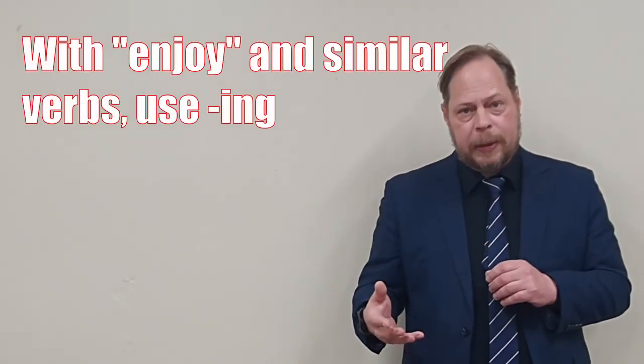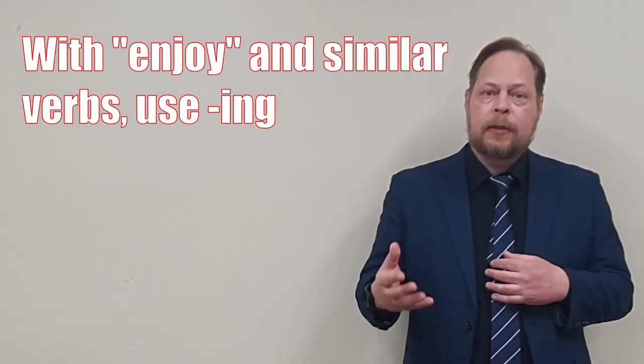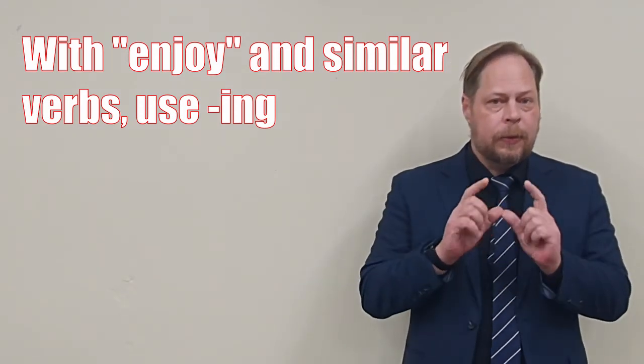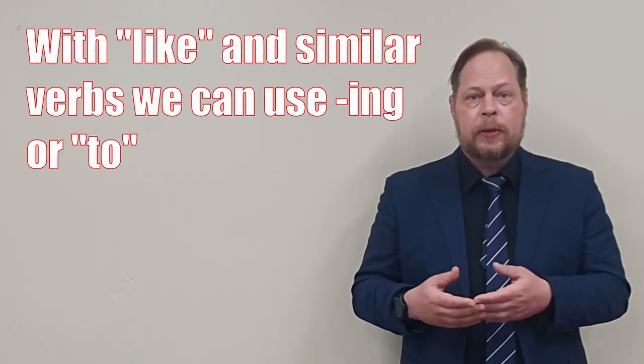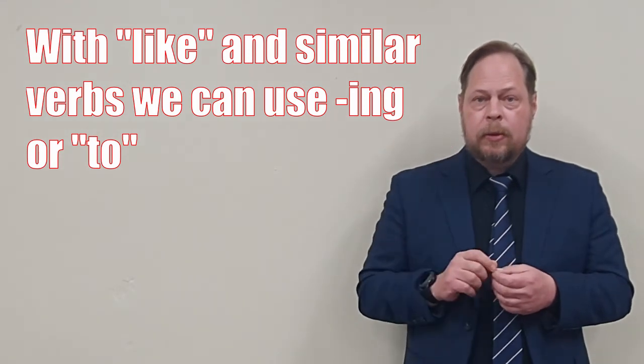So as you can see, with the verbs that follow the same pattern as enjoy, like am crazy about, dislike, and despise, we can only use the -ing word, the gerund, after those because they follow the same pattern as enjoy. But the ones that follow the pattern of like, we can use the gerund, or we can use to. So for example, I prefer eating at home. I like eating at home. I prefer to eat at home. I like to eat at home.